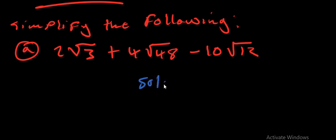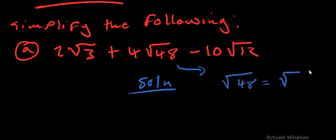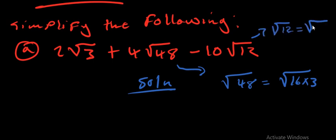To solve this question we first need to analyze the numbers inside the square roots. The number 48 can be written as √(16 × 3), and the number 12 can be written as √(4 × 3).